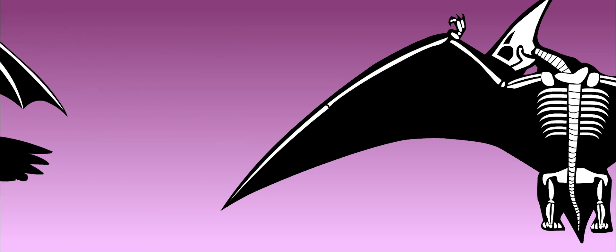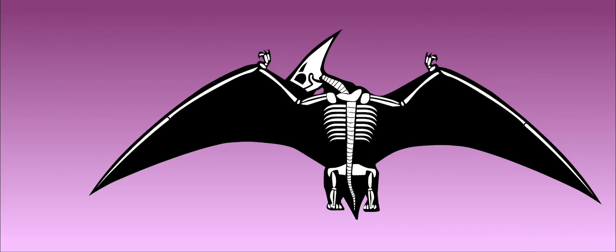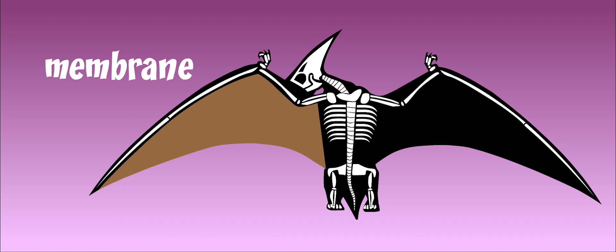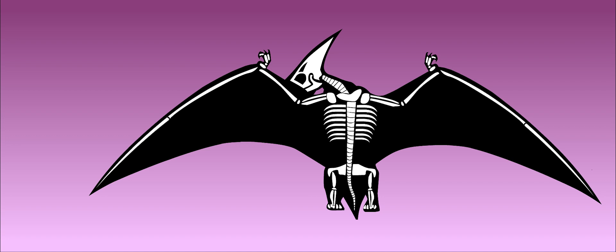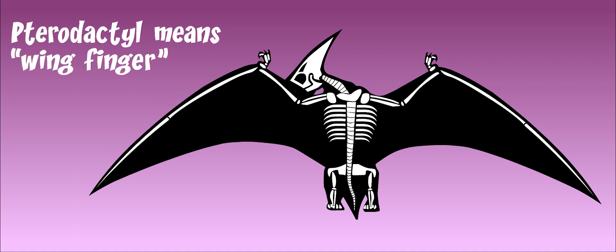But only a pterosaur's fourth finger grew into a very long, strong bone. It held a tough layer of skin, called a membrane, that grew all the way down to the top of its legs. This is how the pterodactyl got its name, which means wing finger.